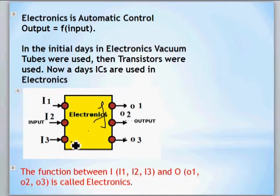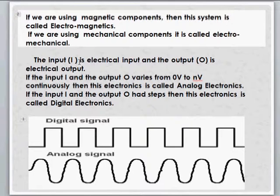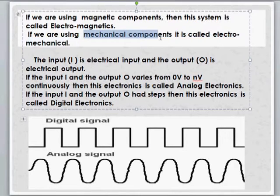There always remains a logic between the input and the output. Now if in between input and output, we are using the magnetic component, then that system is called electromagnetic. If between input and output we are using mechanical components, then it is called electromechanical.